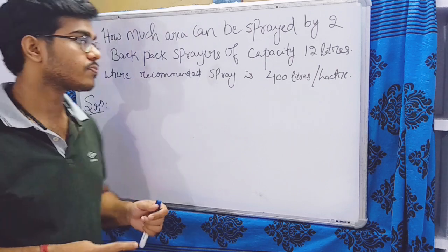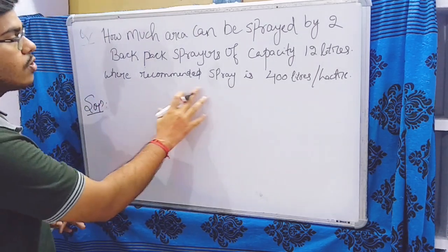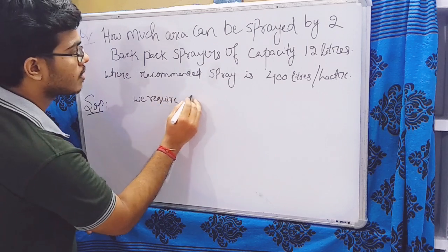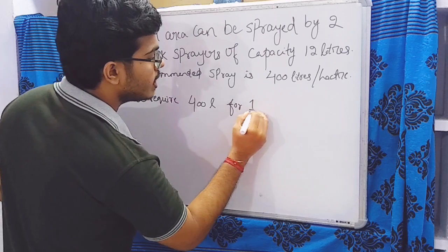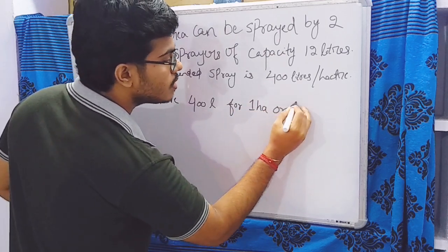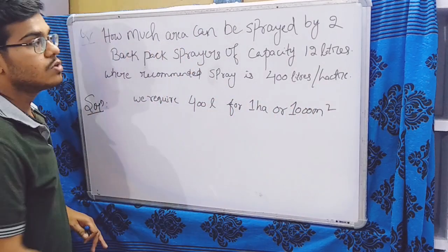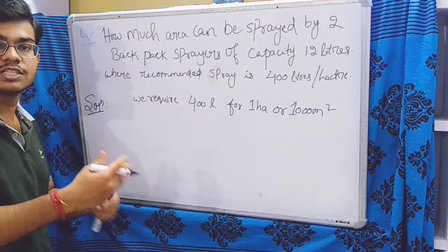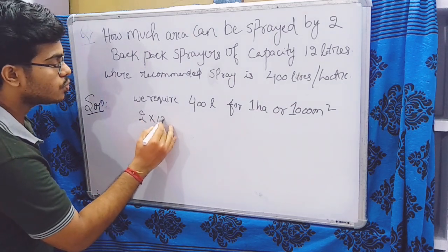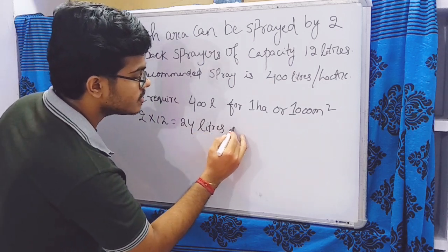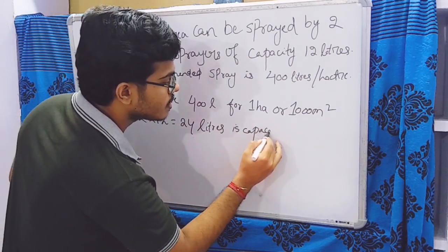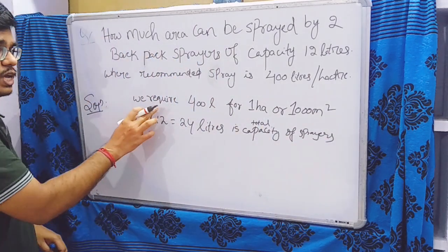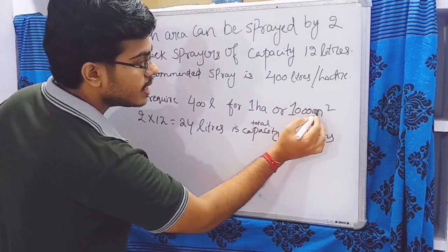The recommended spray dose is 400 liters for one hectare, which equals 10,000 square meters. We have two tanks of 12 liters, so the total spray capacity we have is 2 × 12 = 24 liters. This is our total sprayer capacity.